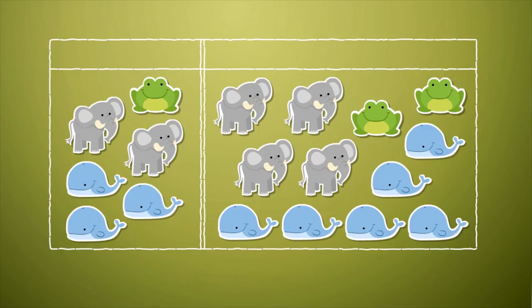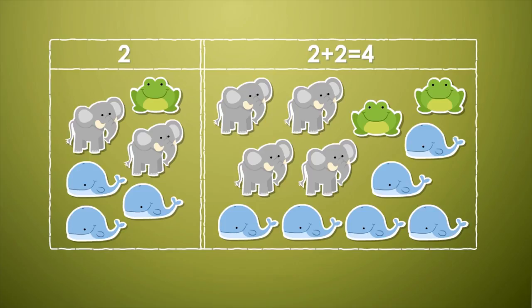There is one frog in the first row, and there are two in the second. Next, there are two elephants, and there are four in the other column.